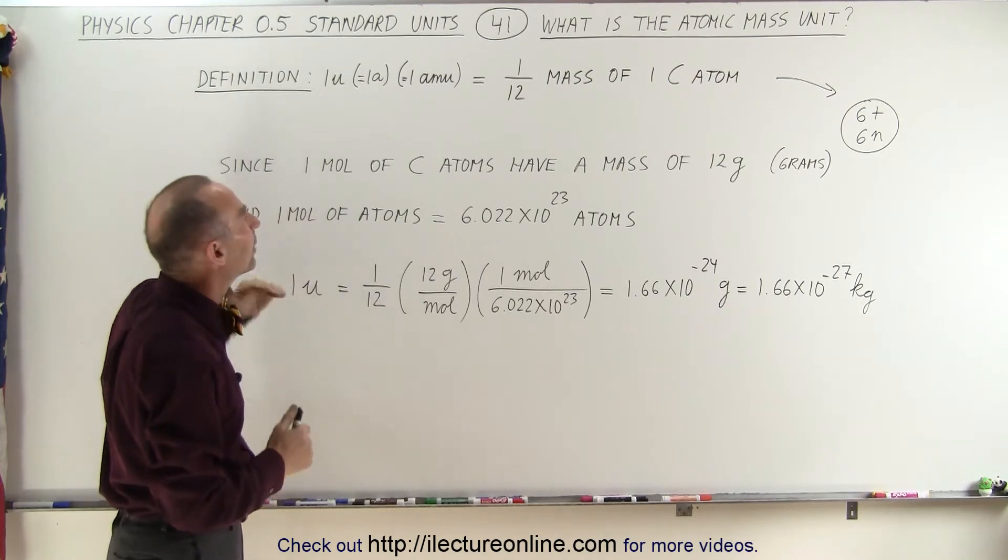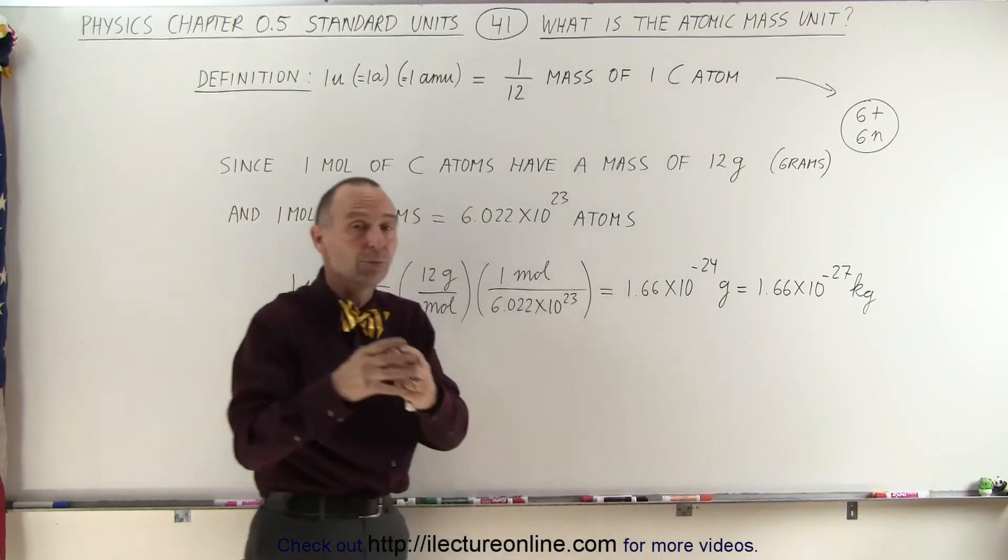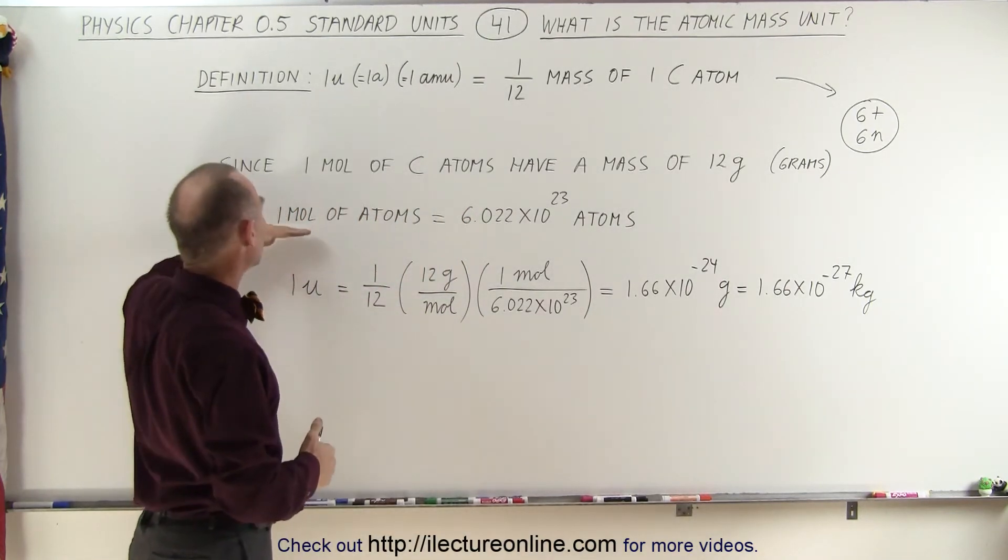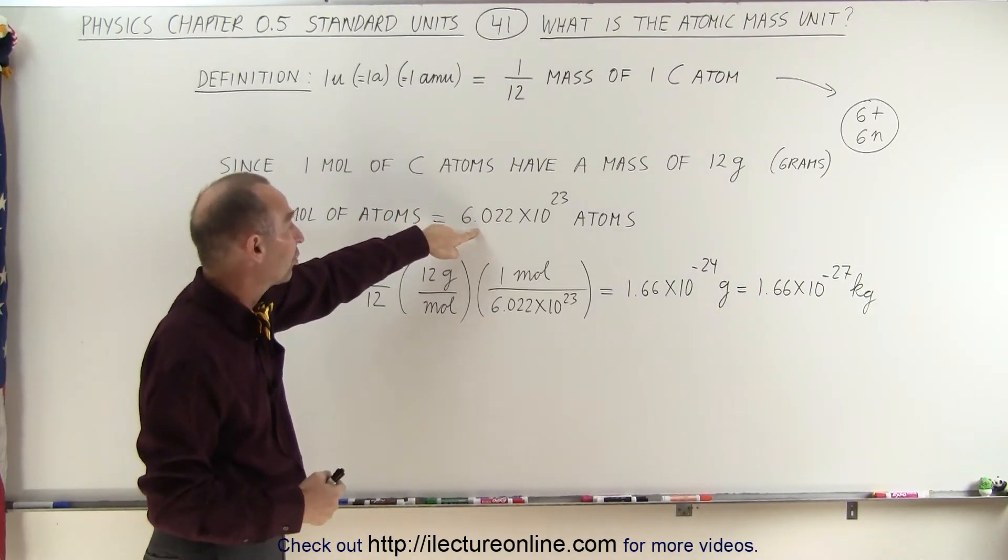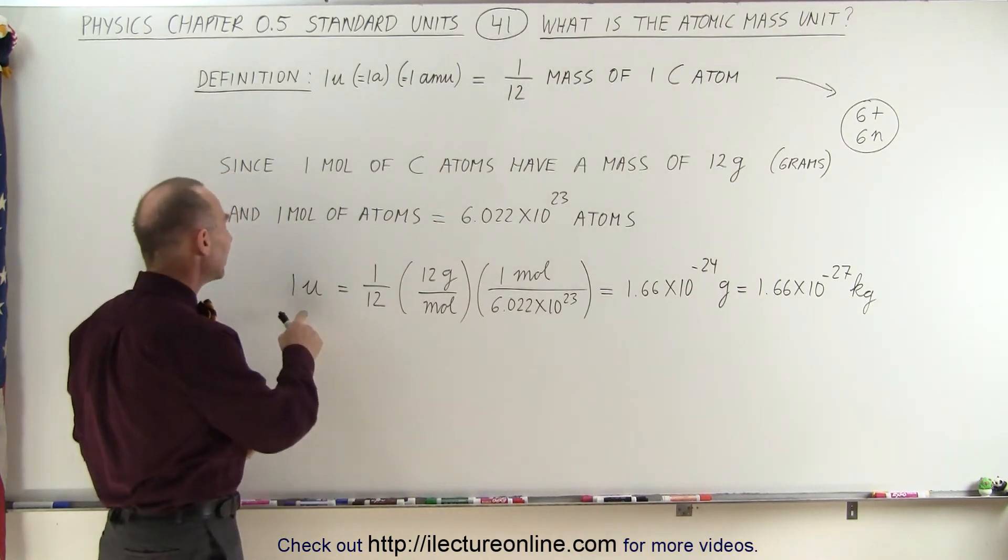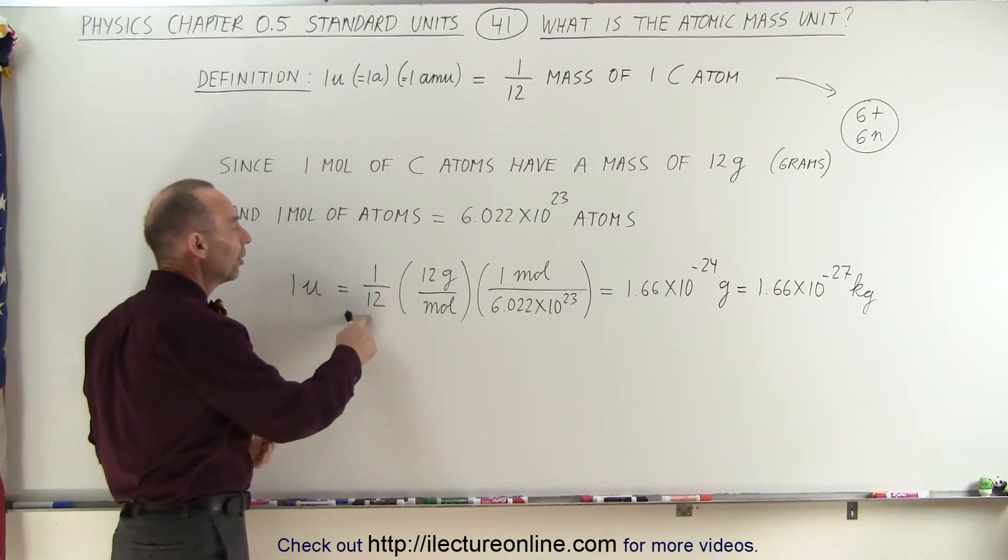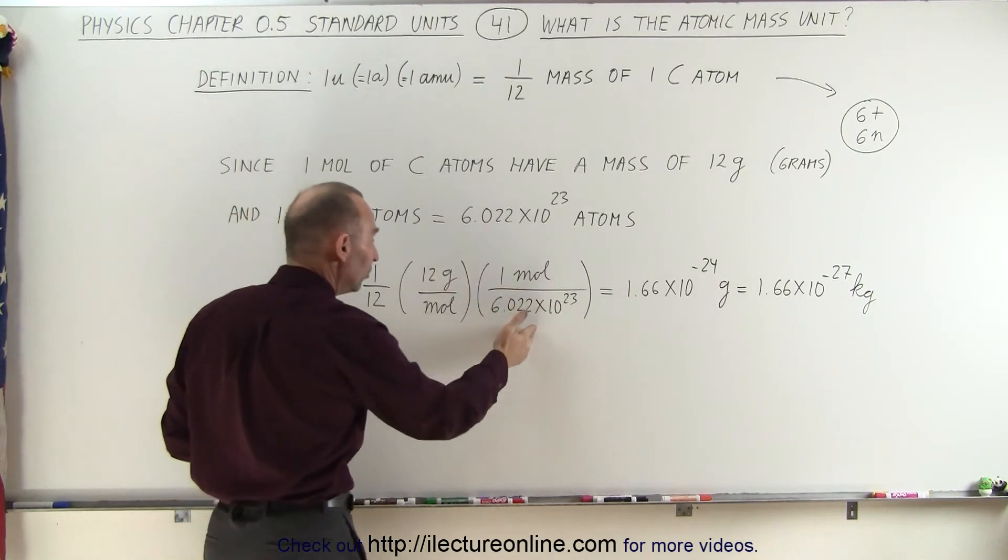Since 1 mole of carbon atoms have a mass of 12 grams, and we know that 1 mole of atoms is equal to Avogadro's number, 6.022 times 10 to the 23, if we calculate the value of an atomic mass unit, we take 1 twelfth of 12 grams per mole, and then we do the conversion from mole to atoms.